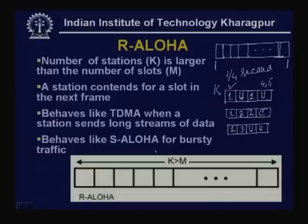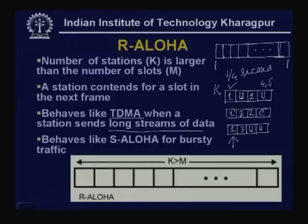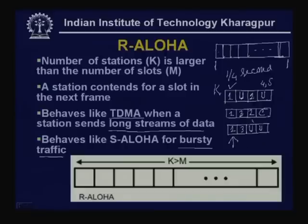If a particular station keeps on sending continuously, it behaves like TDMA — Time Division Multiple Access. When a station sends long streams of data continuously in one slot, it occupies that slot consistently. On the other hand, if traffic is bursty and the number of packets is small, it will appear like slotted ALOHA, with different stations transmitting in different slots alternately. This is the Reservation ALOHA protocol, where the number of slots is smaller than the number of stations.